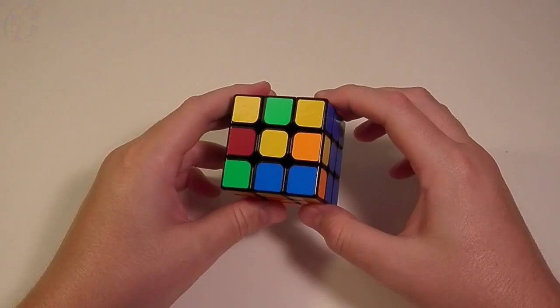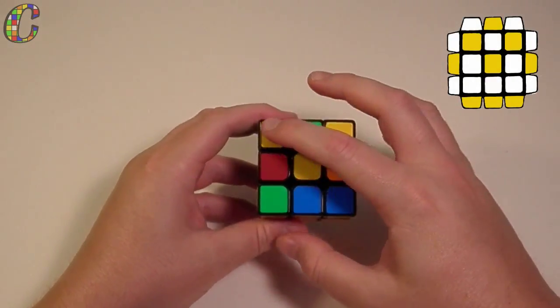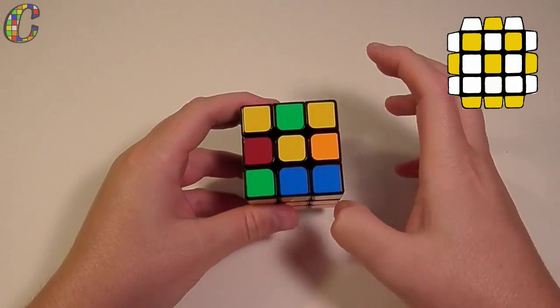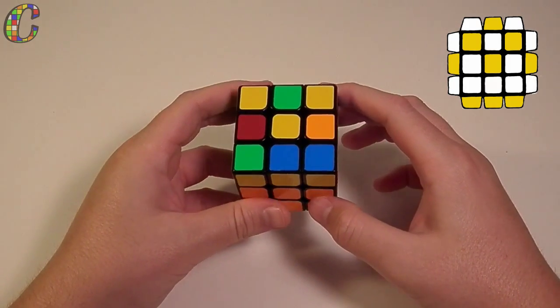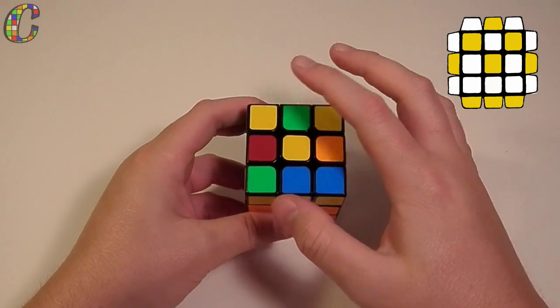Now the first case we're covering today is OLL number 18. Both cases today have this v-shape on top. It has the dot and two oriented corners. The way you'll tell them apart is by looking at the side that the arrow points to.